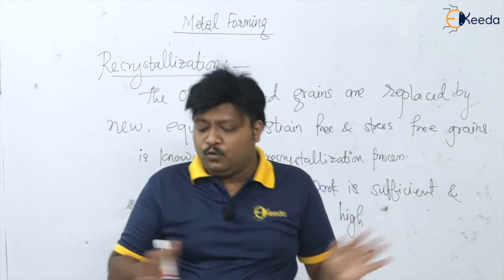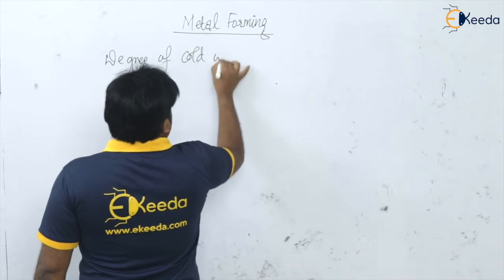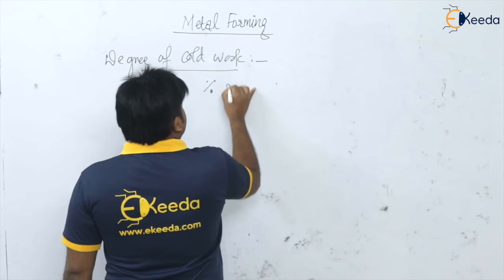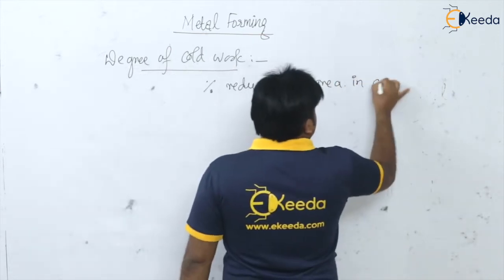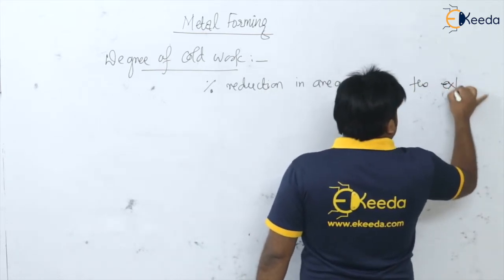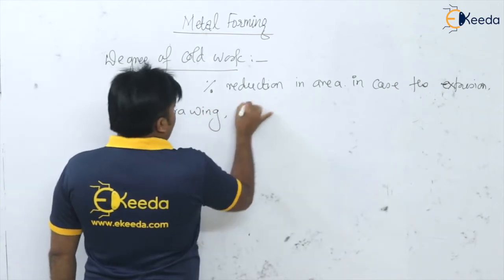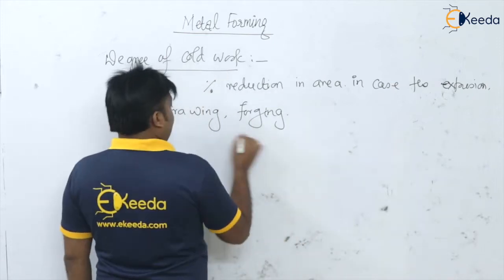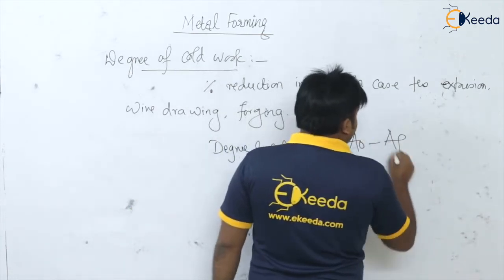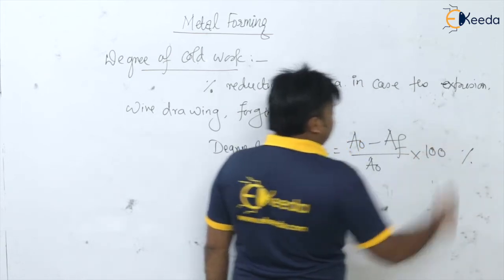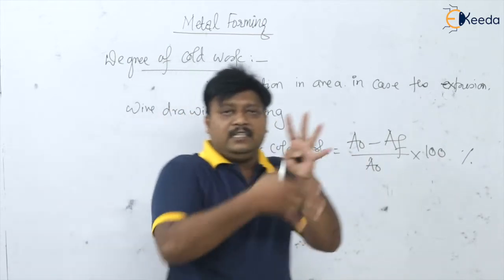What is the degree of cold work? The degree of cold work is nothing but the percentage reduction in area. In case of processes like extrusion, wire drawing, and forging - where generally circular cross-sections are involved - we can write: Degree of cold work = (Original area minus final area) divided by original area, multiplied by 100. This gives the percentage reduction in area.